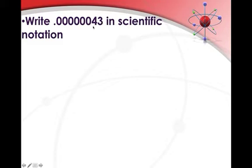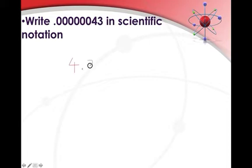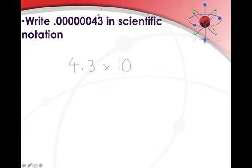So we look for a number between 1 and 9.999, and because the number is quite small we know that it's going to be a negative power — we're counting to the left, which also means it's negative. If we were counting to the right to get to the decimal place, that means we'd have a positive magnitude. So we simply count the number of decimal places: one, two, three, four, five, six, seven — and we end up with an answer of 4.3 times 10 to the negative 7 as the representation of that number in scientific notation form.